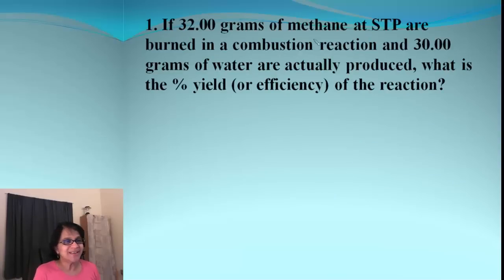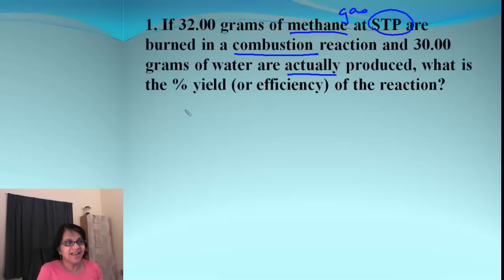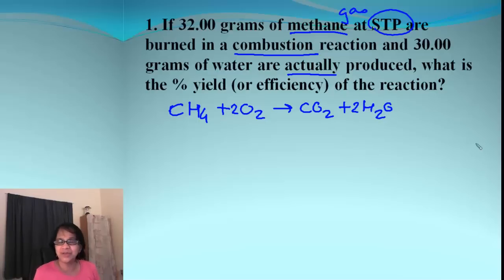Let's do our first problem. We have methane at STP — keep in mind it's a gas — and it is undergoing a combustion reaction. The reaction is methane gas with oxygen giving carbon dioxide and H₂O. Balancing it: we get a coefficient of 2 on O₂ and 2 on H₂O, and we are good.